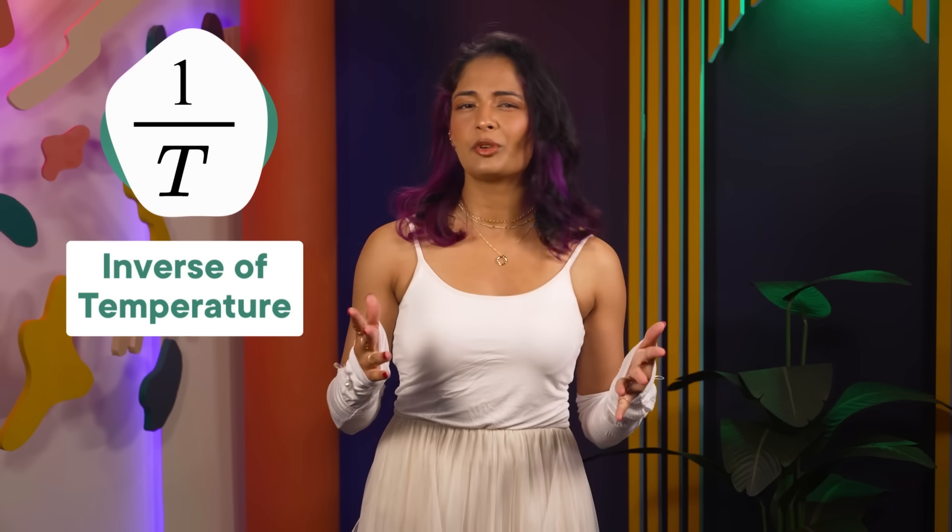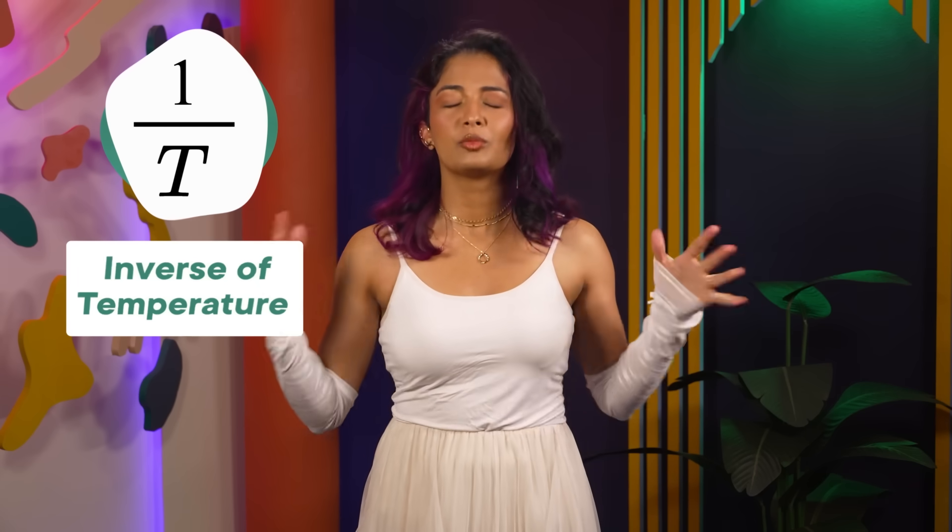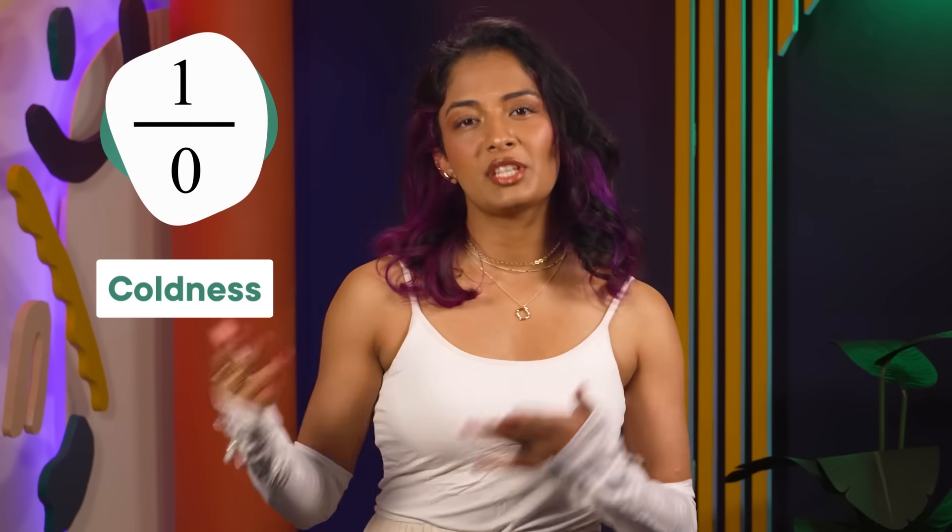If you look at the actual equations physicists use for all this stuff, you'll notice that temperature is in the denominator. That means, instead of things depending on temperature, they kind of depend on the inverse of temperature, 1 divided by T. But what the heck is the inverse of temperature? For the sake of this episode, we'll call it coldness. Because if you try and plug in a temperature of 0, 1 over T slowly becomes infinity. Absolute 0 is infinite coldness, which sounds right to me.